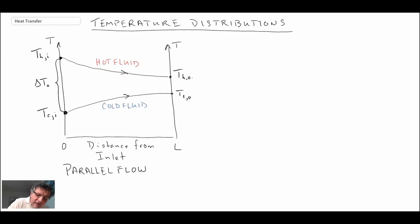And then this ΔT over here is ΔT at location L. So that is the case of parallel flow with the parallel heat exchanger. Now let's take a look at what happens with counterflow.